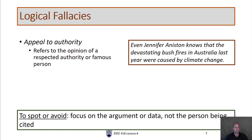Appeal to authority refers to citing the opinion of a respected authority or famous person. For example: 'Even Jennifer Aniston knows that the devastating bushfires in Australia last year were caused by climate change.' Often we hear famous people cited — sometimes they have true authority and sometimes they don't. It's often somebody who has fame or authority in one area but overreaches into some other area where they really have no credibility.